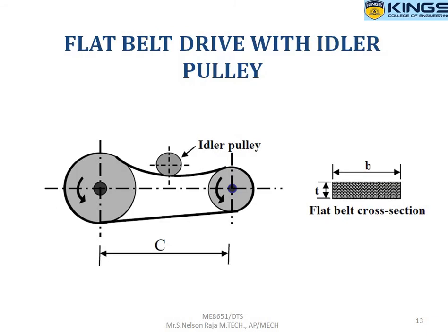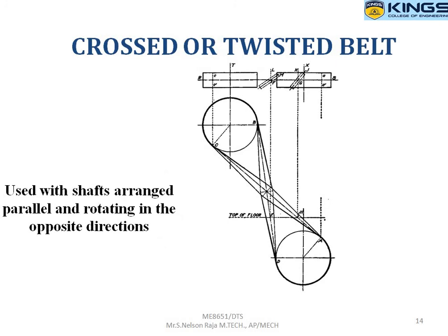The next type is the flat belt drive with an idler pulley, where a smaller pulley is introduced between the driving and driven pulley. The idler pulley is used to achieve the desired friction or the desired power transmission capacity. The distance between the two main pulleys is called the center distance, denoted as C. In a crossed or twisted belt drive, both shafts are parallel but rotate in opposite directions — if the driving pulley rotates clockwise, the driven pulley rotates anticlockwise.